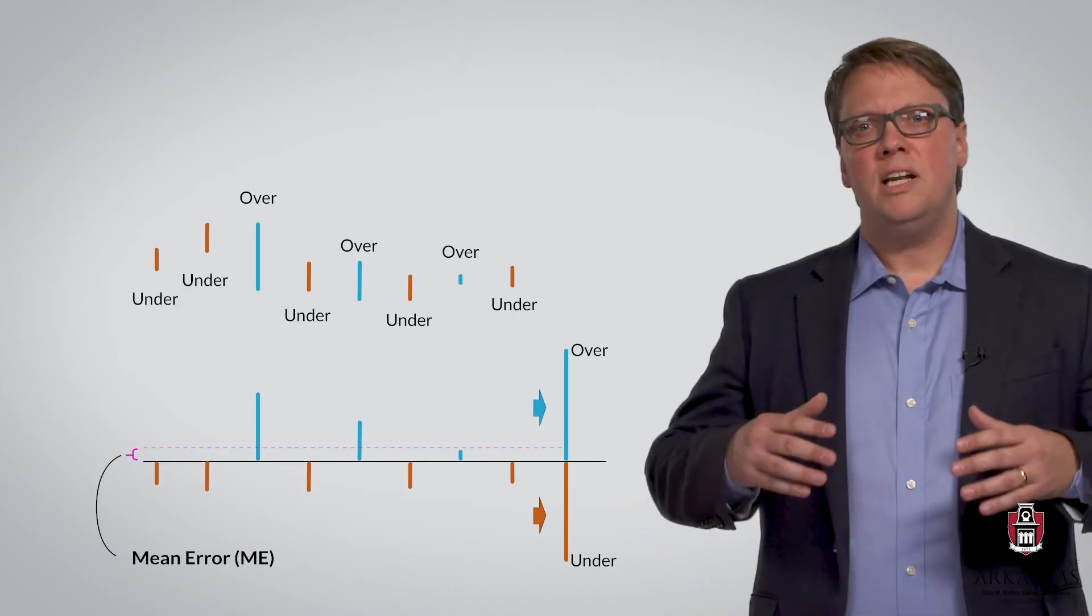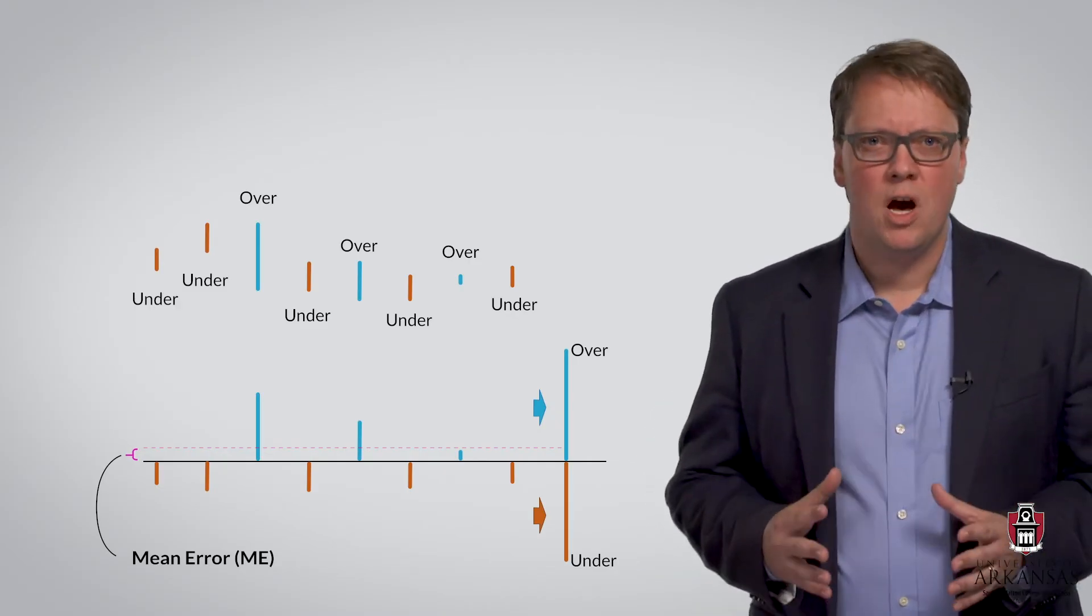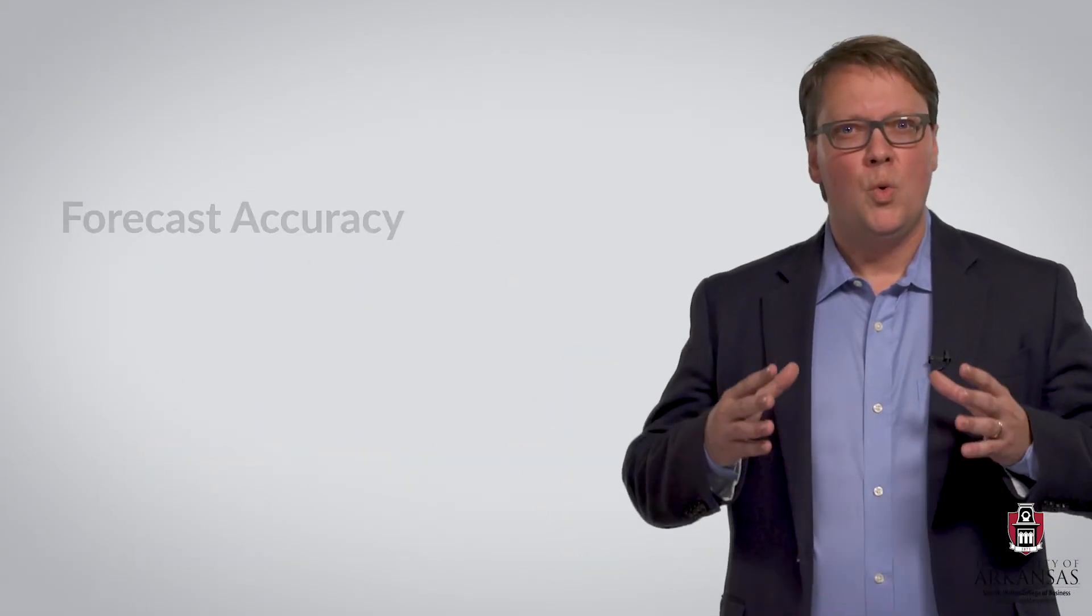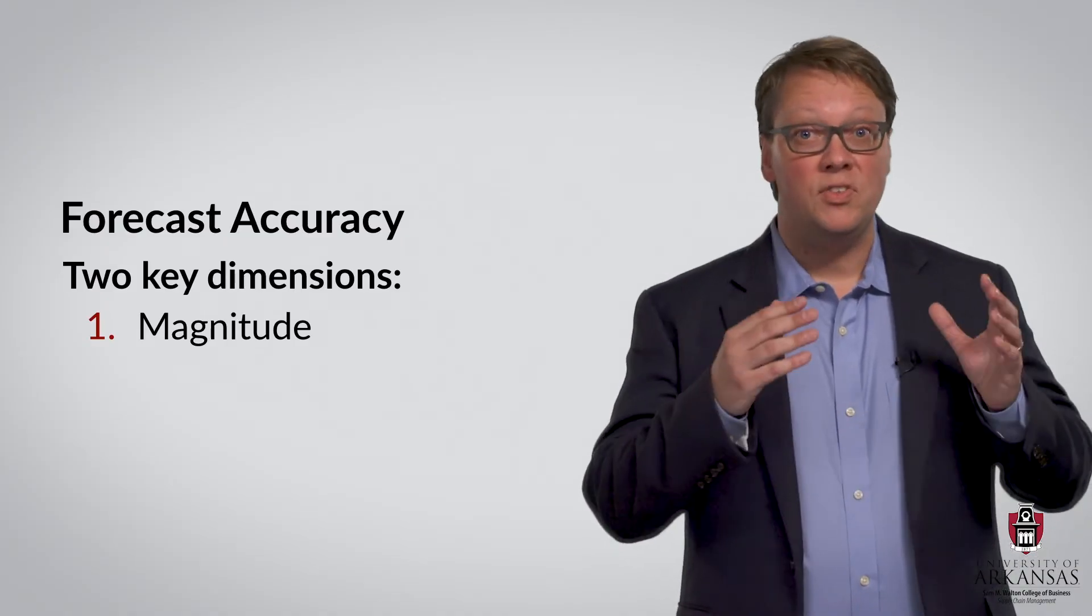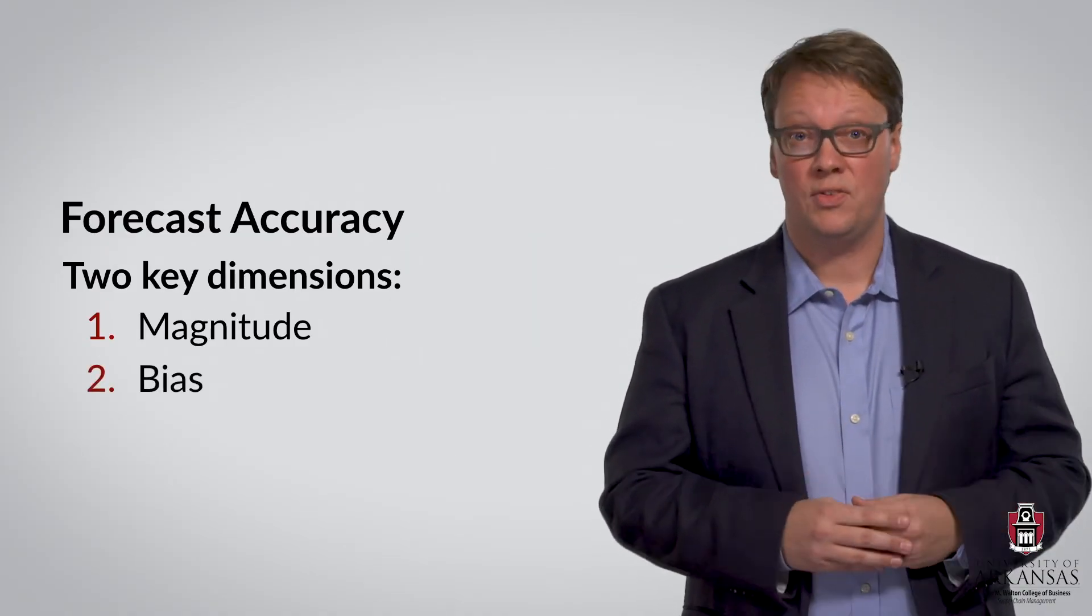So, let's recap this all-important topic of forecast accuracy. We are interested in assessing two key dimensions of forecast accuracy. The first dimension pertains to the magnitude of forecast errors, and the second dimension refers to the bias in forecasts.